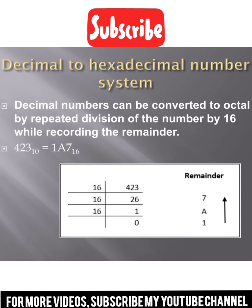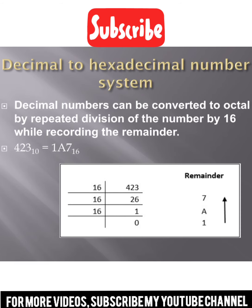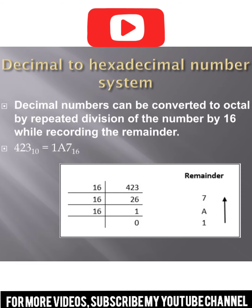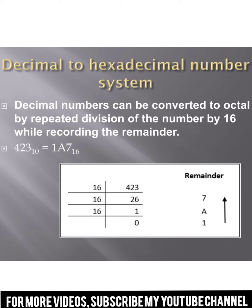10 is represented as A in hexadecimal, then we add 1. The total answer is 1A7. This converts the decimal number system to hexadecimal. That concludes today's lecture — keep watching my videos and share with your friends, thank you.